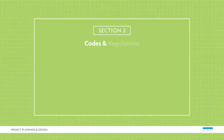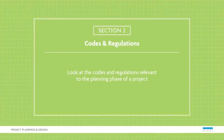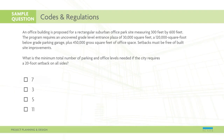In the codes and regulations section, you'll look at codes and regulations relevant to the planning phase of a project. Let's look at a sample question. An office building is proposed for a rectangular suburban office park site measuring 300 feet by 600 feet. The program requires an uncovered grade level entrance plaza of 30,000 square feet, a 120,000 square foot below-grade parking garage, plus 450,000 gross square feet of office space. Setbacks must be free of built site improvements. What is the minimum total number of parking and office levels needed if the city requires a 20-foot setback on all sides? The correct response is 5.